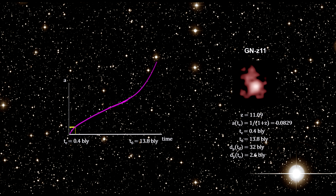To illustrate, let's take a final look at GNZ11's numbers. Its redshift of 11.09 gives us the scale factor at emission time, which gives us the time the light was emitted. All the other numbers follow.